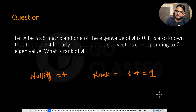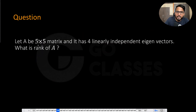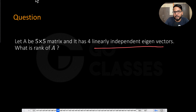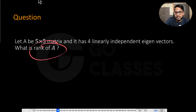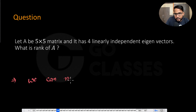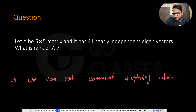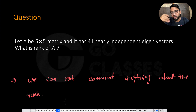Now consider a modified question: let A be a 5×5 matrix with four linearly independent eigenvectors — but they are NOT saying these eigenvectors correspond to λ = 0, or even that λ = 0 exists. Without knowing how many linearly independent eigenvectors correspond to λ = 0, we cannot calculate the rank. The answer is: we cannot comment on the rank.